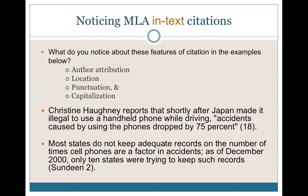Let's talk through the first example, which has a direct quote: Christine Haney reports that shortly after Japan made it illegal to use handheld phones while driving, accidents caused by using phones dropped by 75%. Where is the author attributed? We understand Christine Haney to be the author, and since she's attributed in the sentence, her last name does not appear in the parentheses. The location of the citation is immediately after the end quotation marks, but before the period.